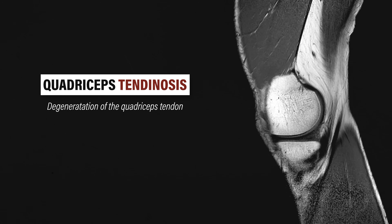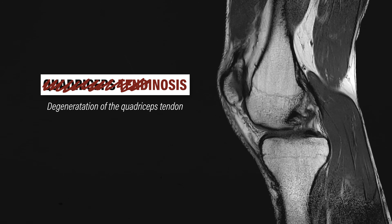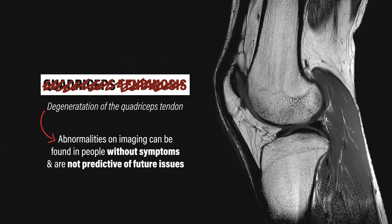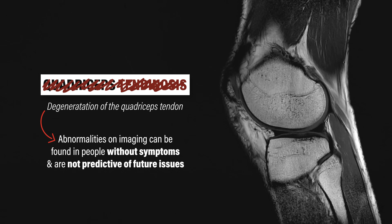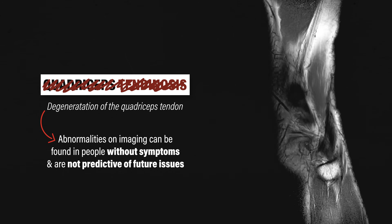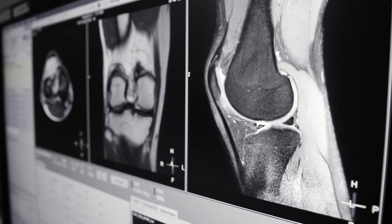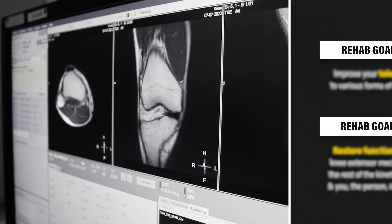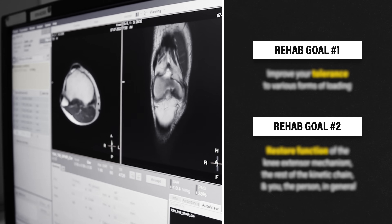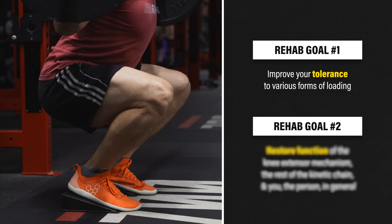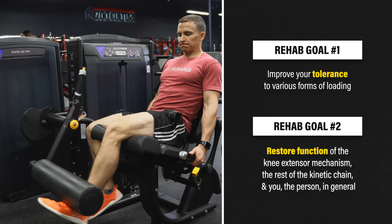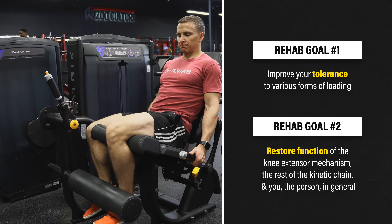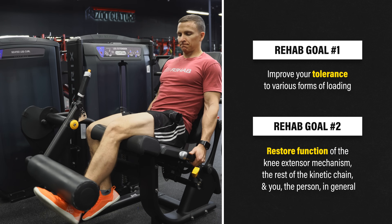Tendinosis, used to indicate a degenerative process, is also not the appropriate terminology, as abnormalities on imaging can be found in people without symptoms and are not predictive of future issues. Therefore, instead of unnecessarily focusing on inflammation or what the tendon looks like on imaging, the goal of rehab is twofold: one, improve your tolerance to various forms of loading, and two, restore function of the knee extensor mechanism, the rest of the kinetic chain, and you — the person — in general.